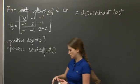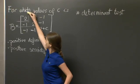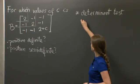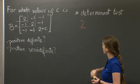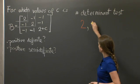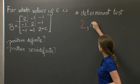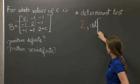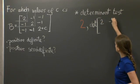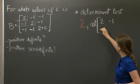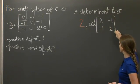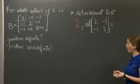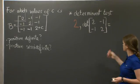So let's calculate the determinants. The first determinant is the determinant of this tiny 1×1 matrix, which is just 2. The next one is the determinant of the 2×2 submatrix: 2, -1, -1, 2, which is equal to 4 minus 1, which is 3.